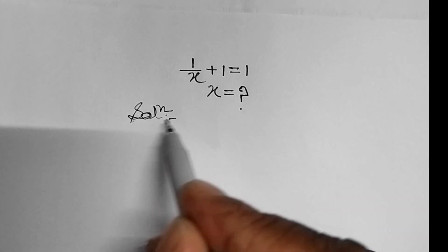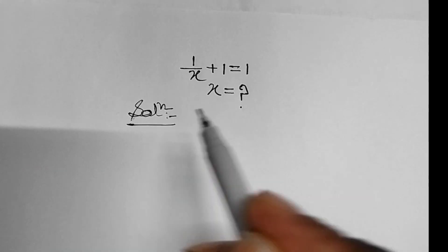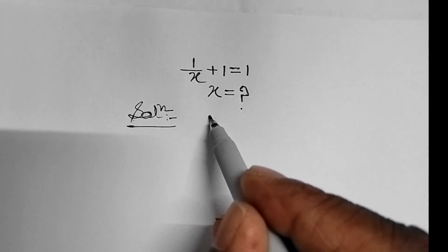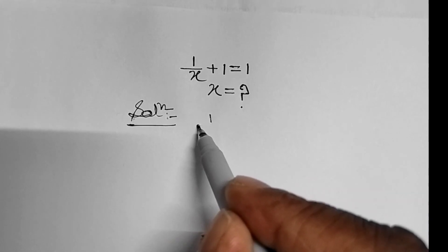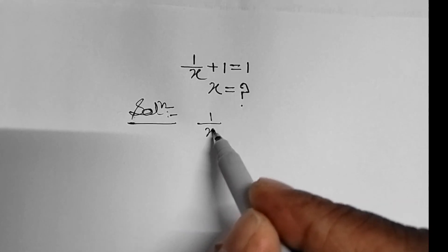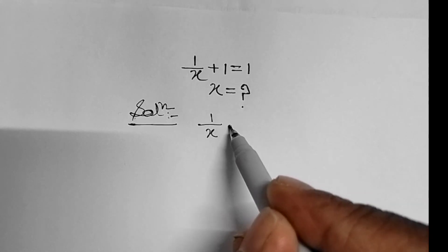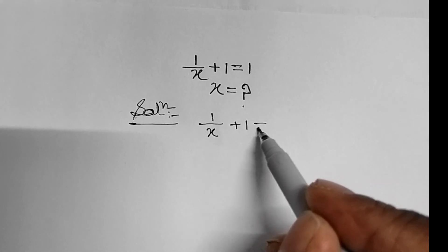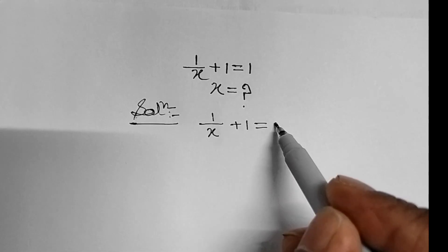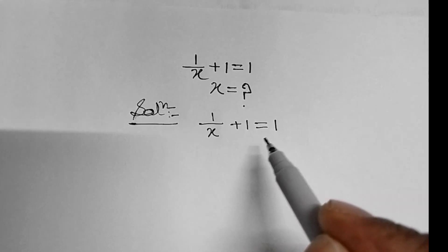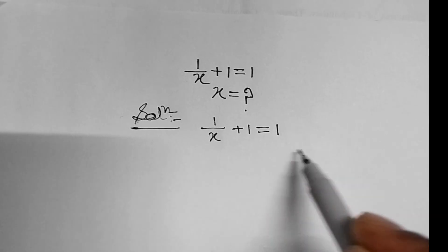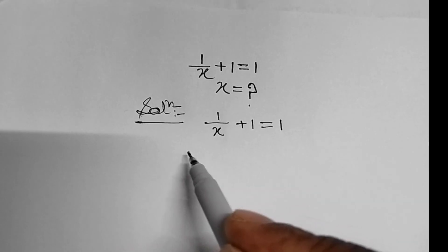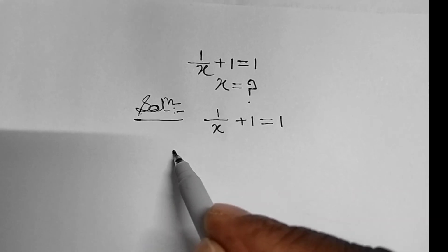First of all, we will have to write the given equation, that is 1 upon x plus 1 equal to 1. Now to solve this equation, we will have to subtract 1 from both sides.